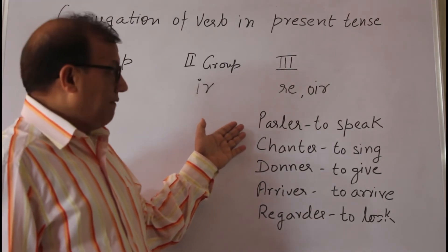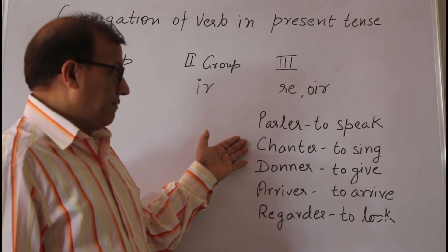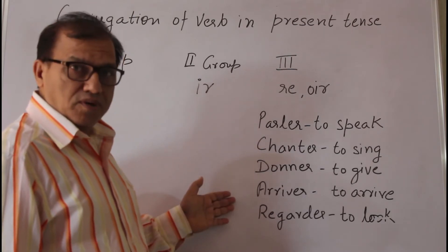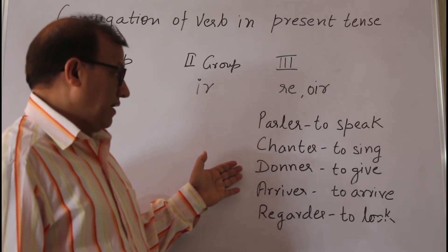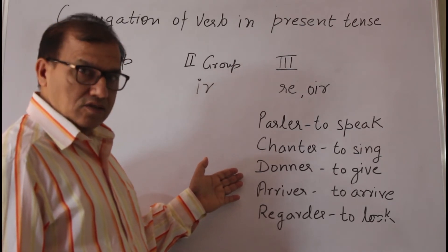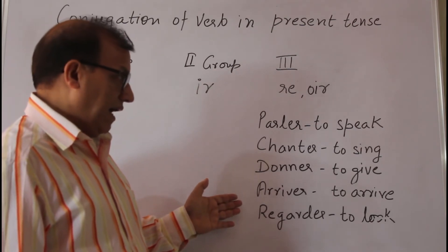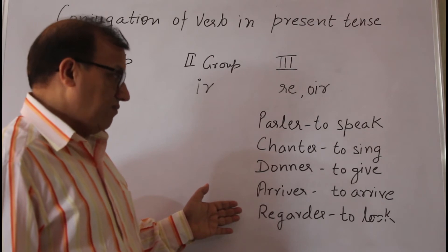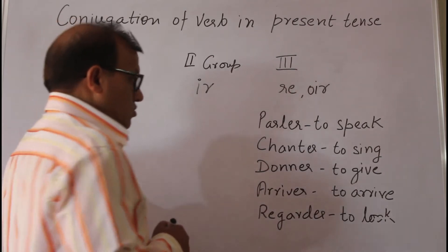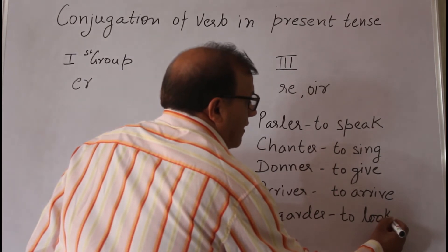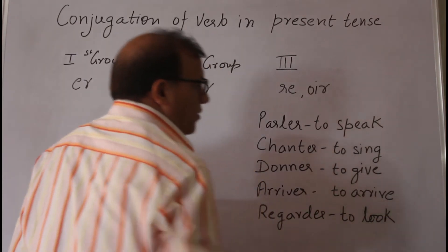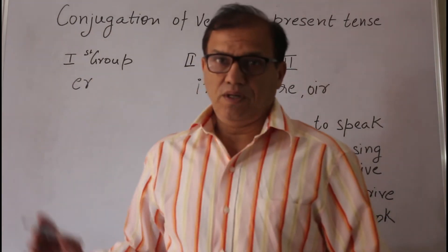Now let's take some examples. Parler is to speak. Chanter, to sing. Donner, to give. Arriver, to arrive. Regarder means to look. So they all are examples of group first verb.